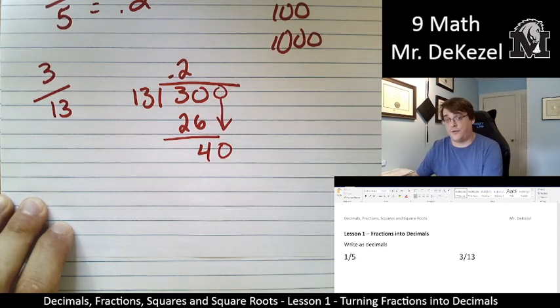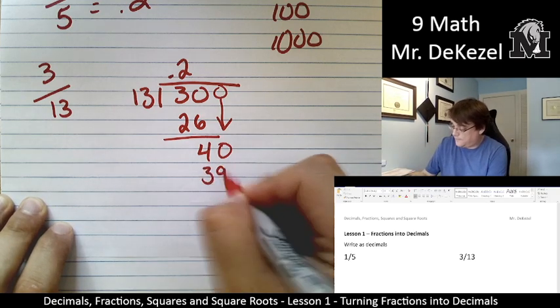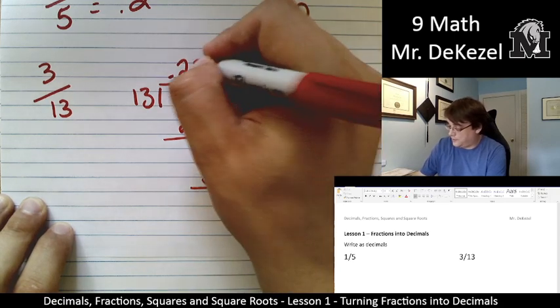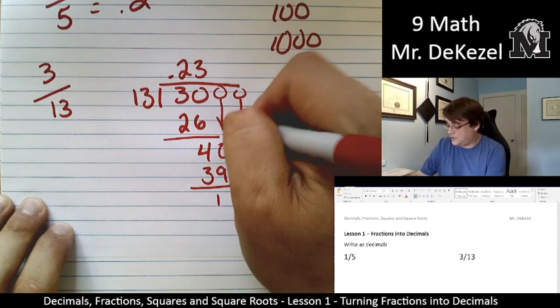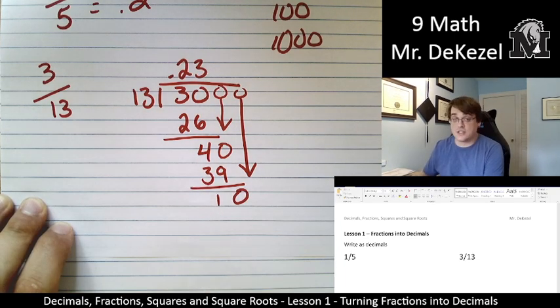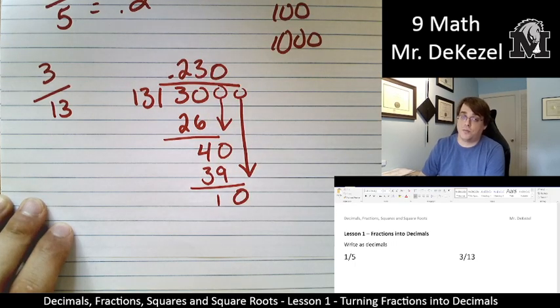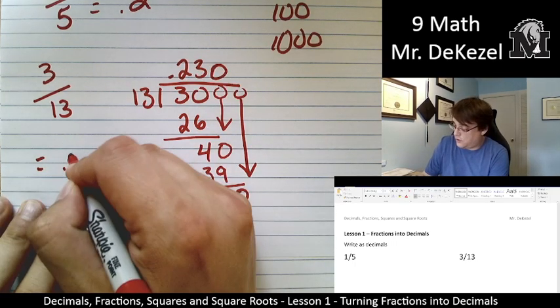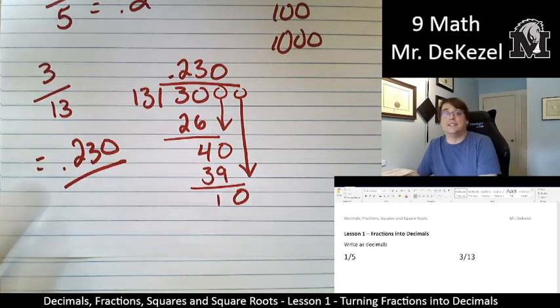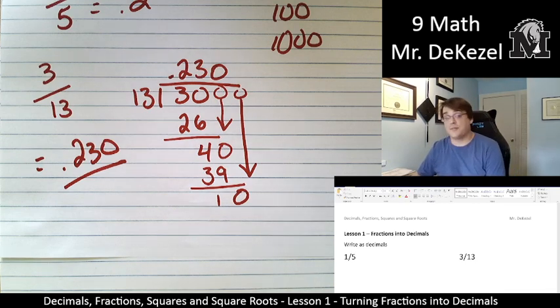We're going to subtract these. It's 4. And we add another 0. We know that 13 goes into 40 three times. 13 times 3 is 39. We subtract those. We're left with 1. We bring another 0 down. 13 does not go into 10. It goes into 10 zero times. So 0.230 is the answer for the decimal that 3 out of 13 represents.